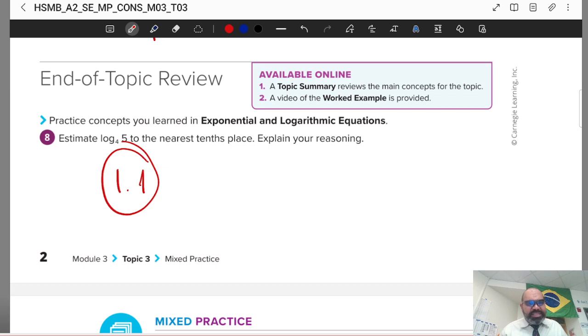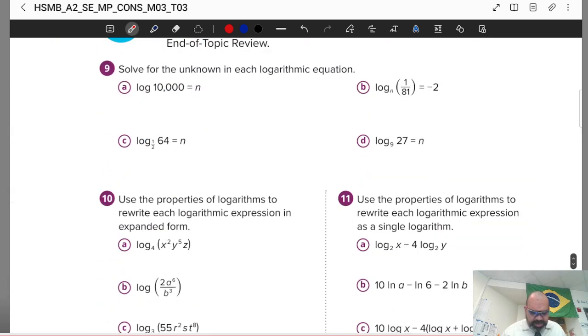This one here. Next one, number 9. Is the same thing. A, B, C, A, C, B. 10 to the N equals 10,000. I will not explain again. We did so many times this stuff here. You'll just be able to go over. This one here, N equals 4. N equals 9. N equals negative 6. And N equals 3 halves.